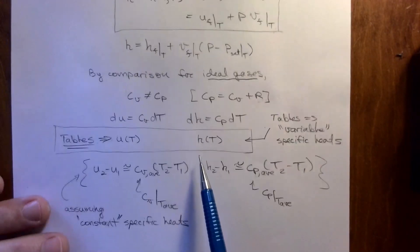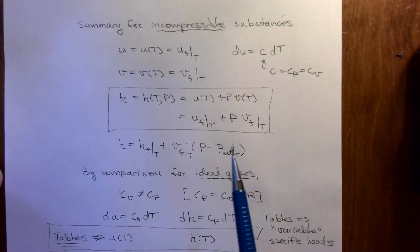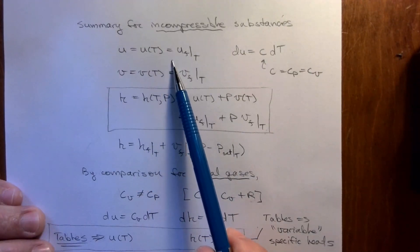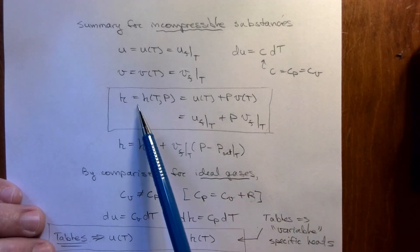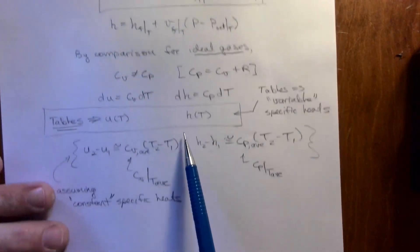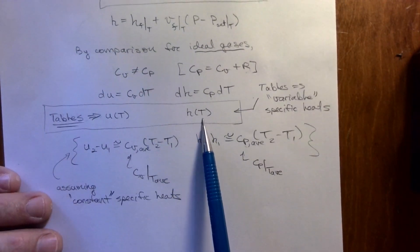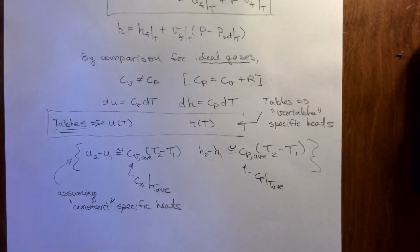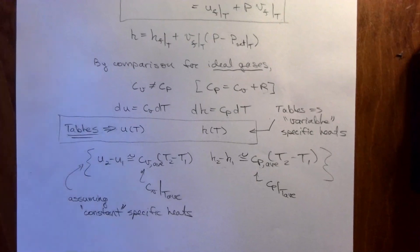There are similarities: U is a function of T only for both incompressible substances and ideal gases. However, H is a function of temperature and pressure for incompressible substances, whereas for an ideal gas H is still only a function of temperature. That concludes this supplemental discussion of incompressible substances and evaluating enthalpy.